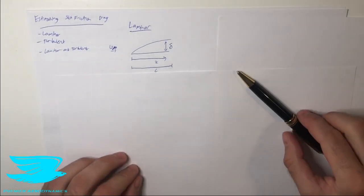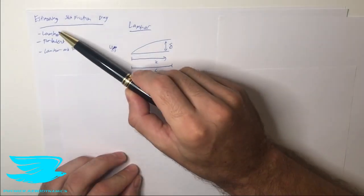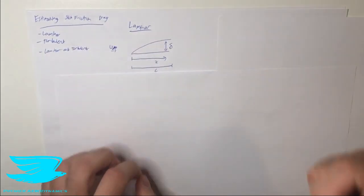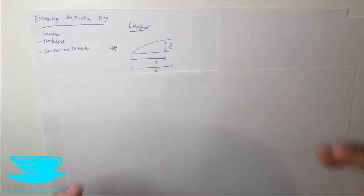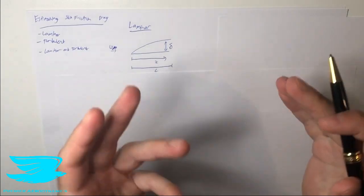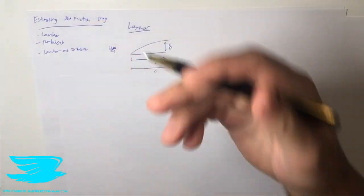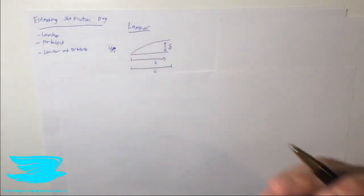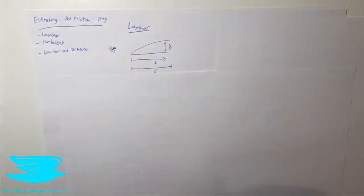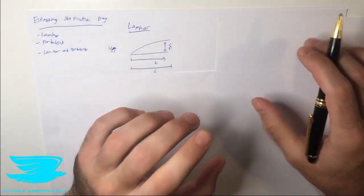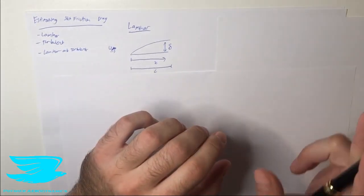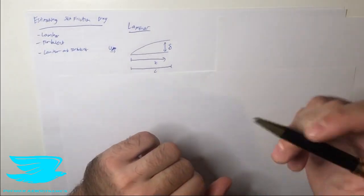What is up, amigos? Today we are looking at estimating the skin friction drag, and this is going to be split into three different parts: the laminar, turbulent, and laminar-and-turbulent boundary layers. If you haven't looked at our video on boundary layers, check that out in the card up here.